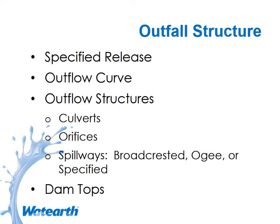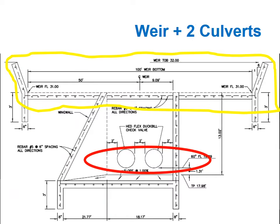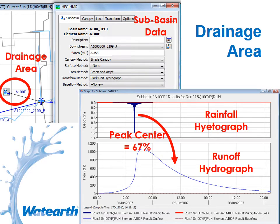Outfall structures can be modeled in several different ways. HEC-HMS capabilities are much better than they were in early versions or back in the HEC-1 days. The outflow structures are most similar to other detention routing programs where we can incorporate either a culvert, an outfall structure, orifice openings, spillways, and so forth. Dam tops can also be used. The specified release and outflow curve require additional details from some other type of analysis. There's great ability to use multiple outfall structures — for example, a trapezoidal weir as a top outfall and two culvert openings at the bottom for lower flows.